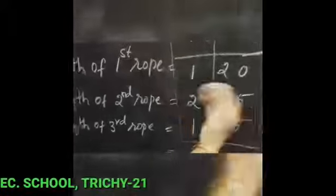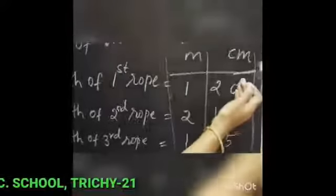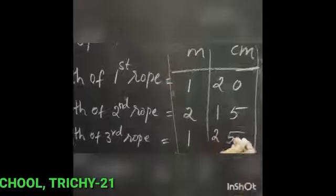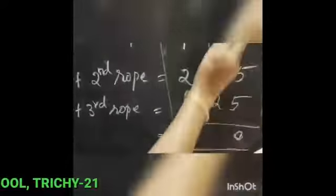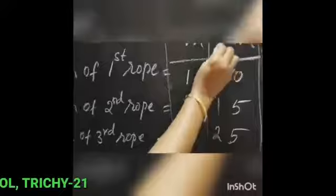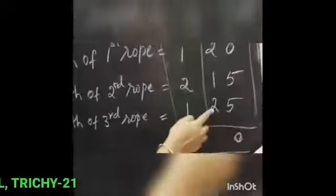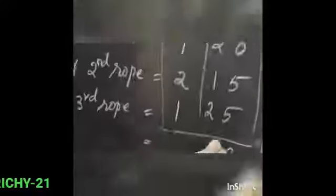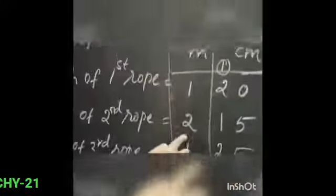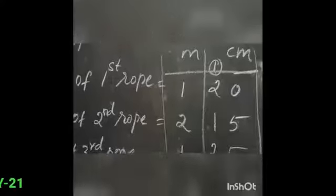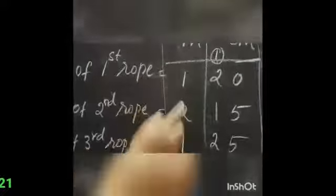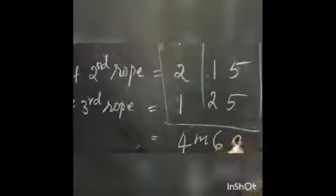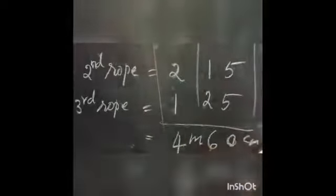Now start from the right side, the centimeter place. In the ones place: 0 and 5. Add 5 plus 5 equals 10, write 0 and carry 1. In the tens place: already 2 plus 1 plus 2 equals 5, plus the carried 1 equals 6. Next, add the meter place: 1, 2, 1 — add these to get 4.